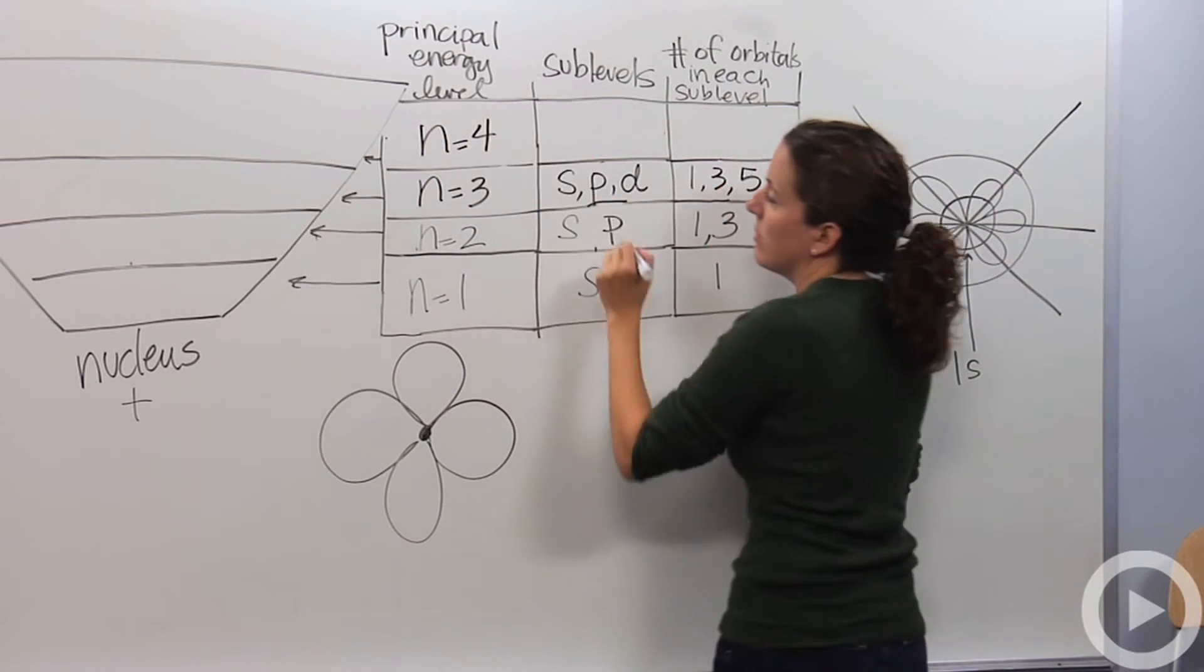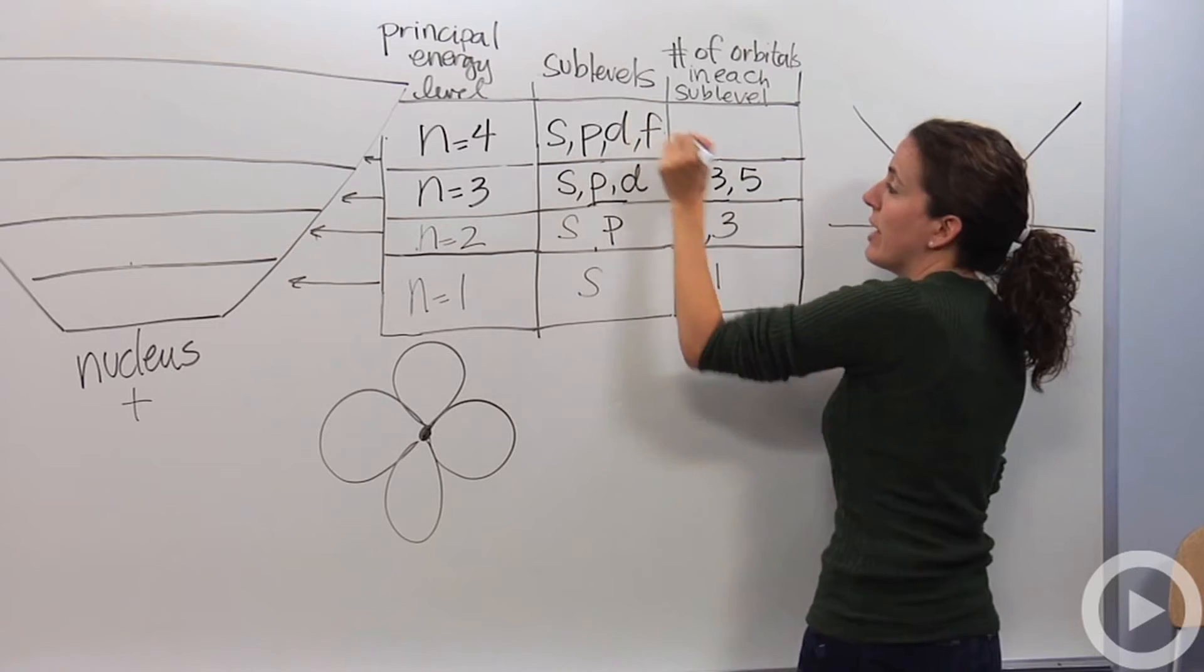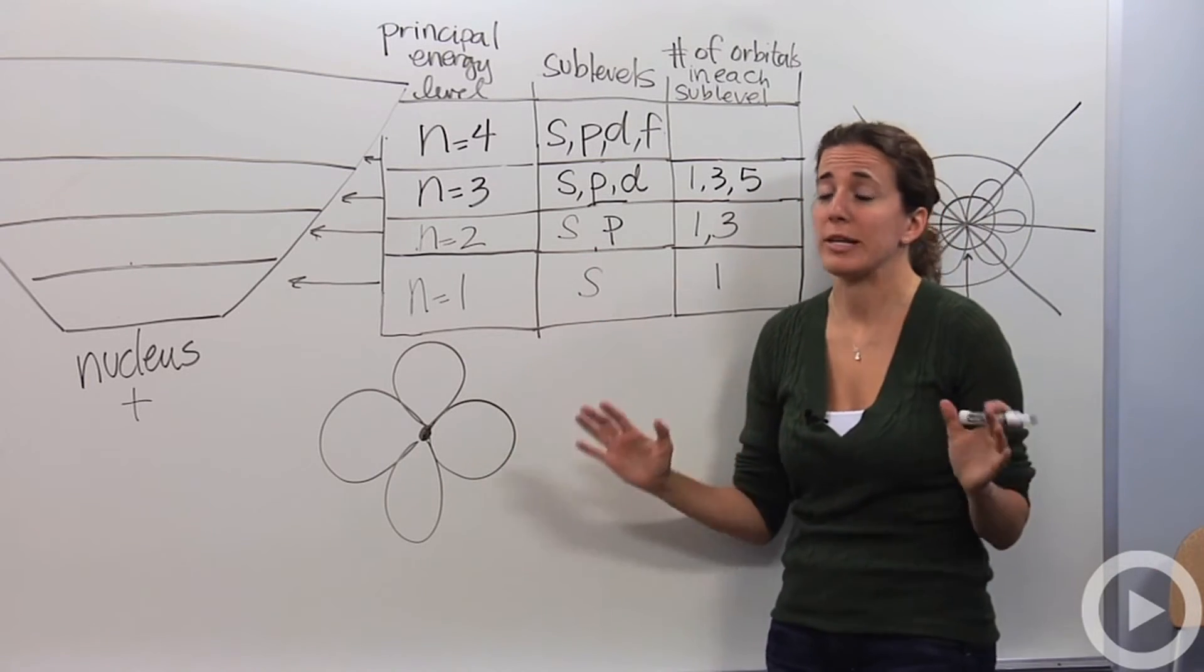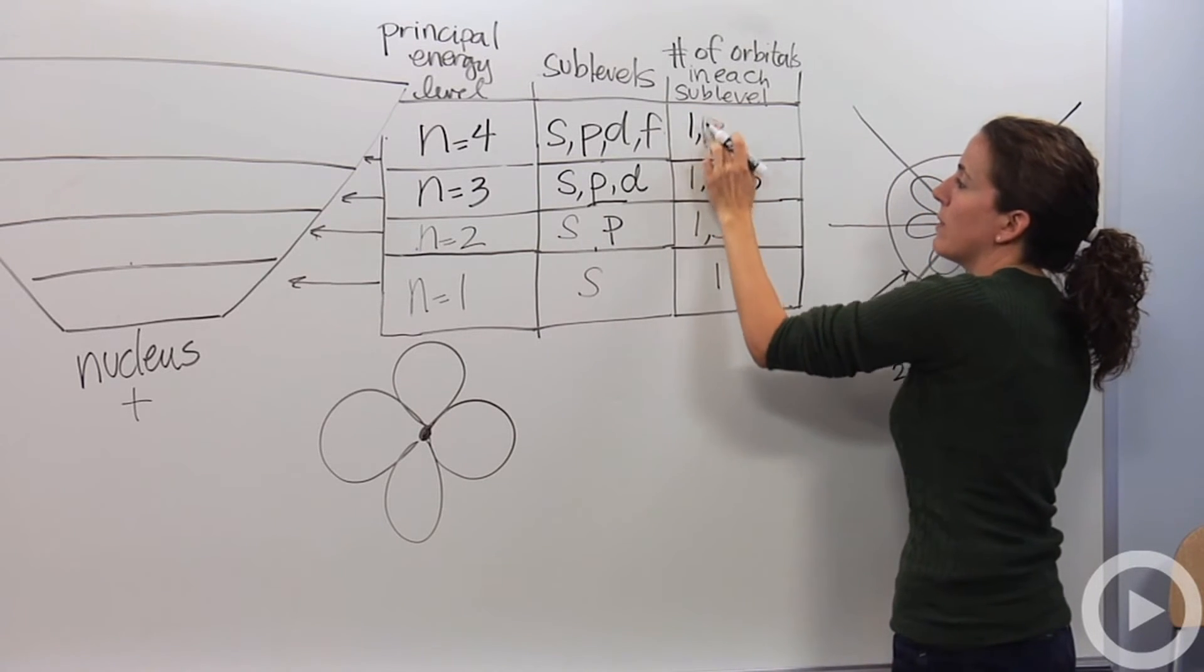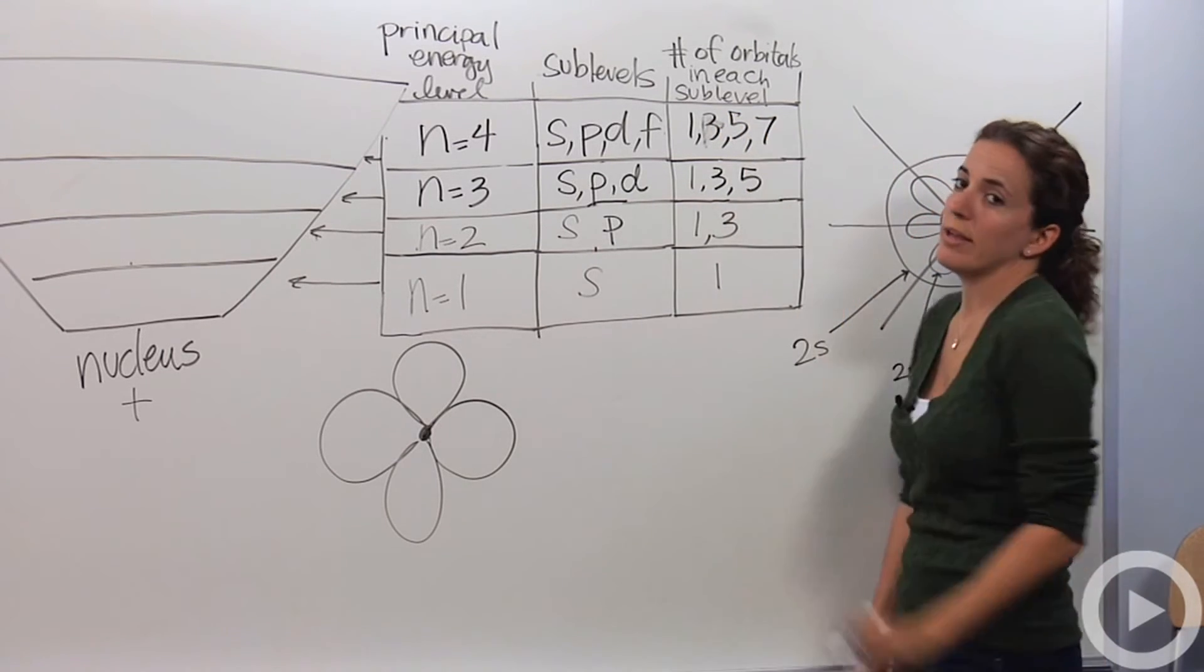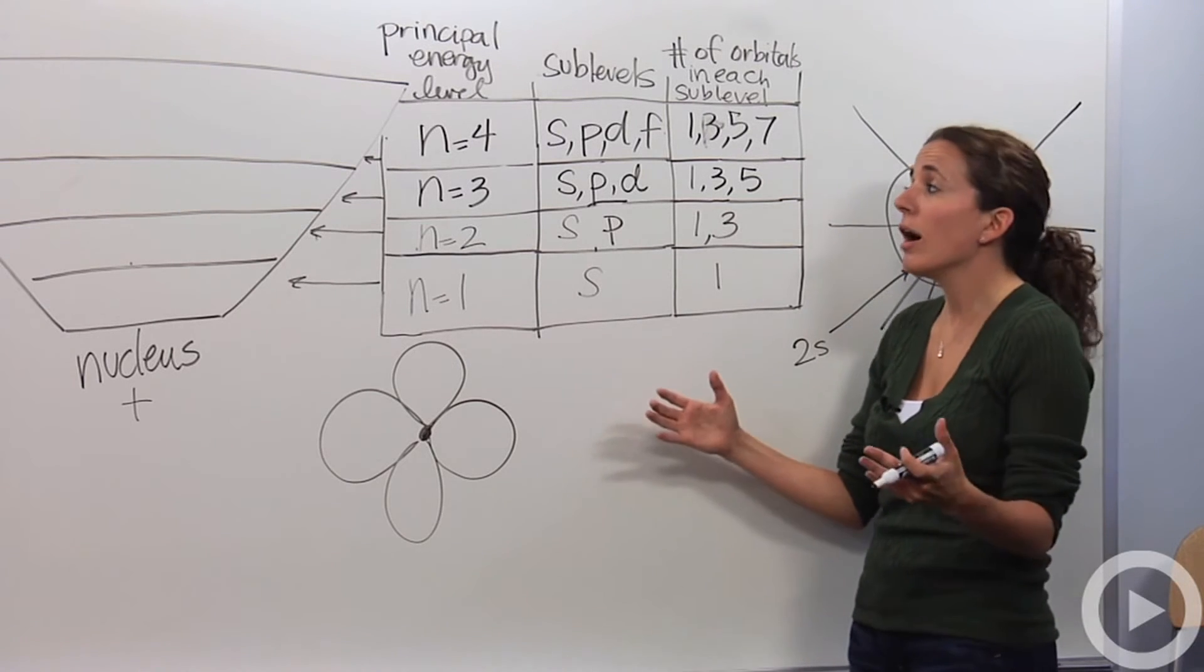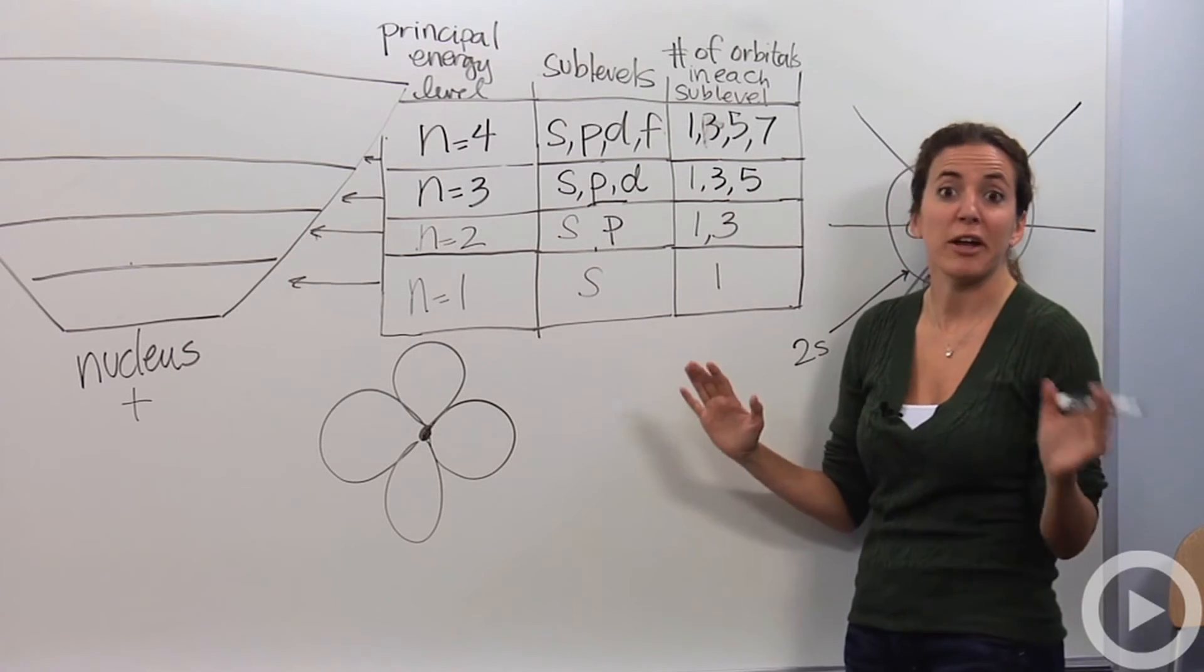The n equals four principle energy level, you have an s also. You have a p again, you have a d, and then you also have an f orbital. F orbitals are extremely complicated. Each orbital actually looks very different from each other, so I'm not even going to attempt to draw it because each one's a little bit crazy. But there's one s orbital, three p orbitals, five d orbitals, and there are seven f orbitals. And f is actually, for now, the highest energy orbital that we are going to find. There are theories that there are other orbitals within the principal energy level, however we're not going to go there because it's just theoretical at this point.